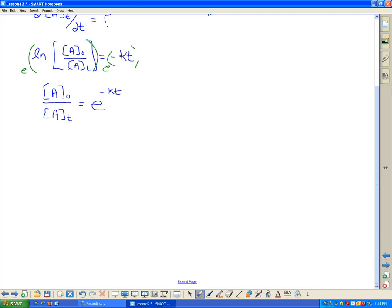I don't really want to do the quotient rule here, so I'm going to multiply that concentration of A over. So I have concentration of A naught equals concentration at any time e to the exponent negative kt. Now I'm all set to go.